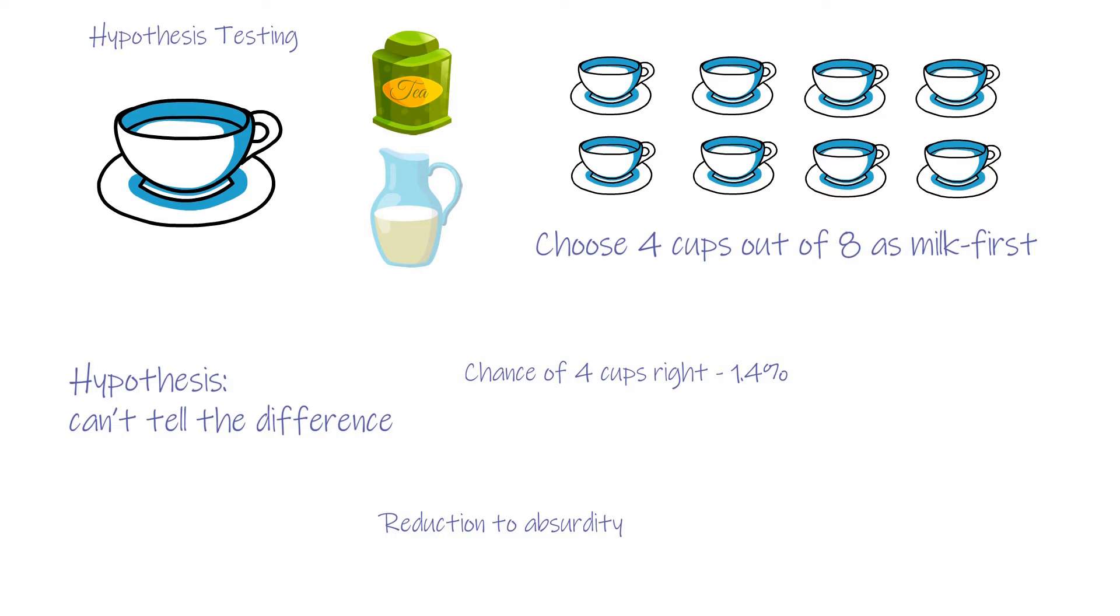It contains two parts: hypothesis and testing. In our example, the hypothesis is the lady can't tell the difference, and ask her to choose 4 cups out of 8 as milk first is testing.